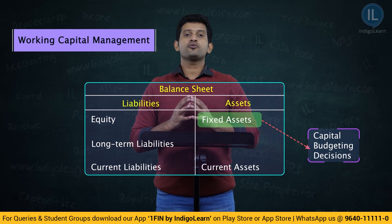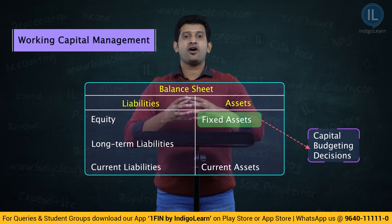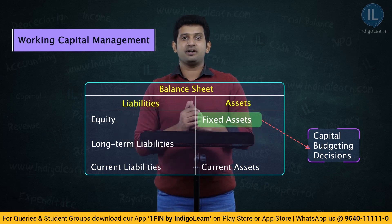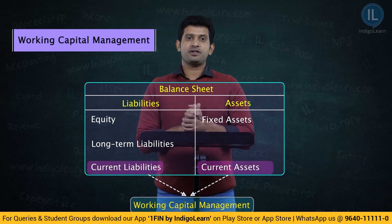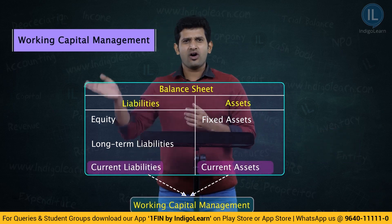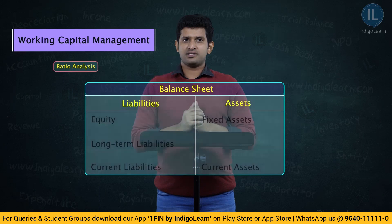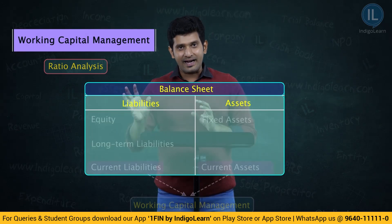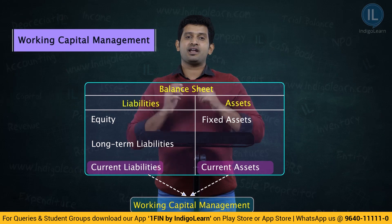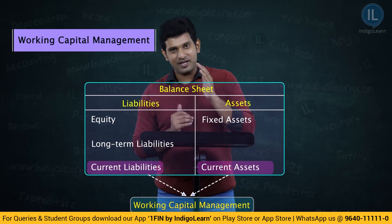Now we will move to the next segment, that is the combined segment of current assets and current liabilities, which is called working capital management. The study of all these things put together we know is called ratio analysis, and that part we have completed. Now let us focus mainly on the study of current assets and current liabilities, which is called working capital management.